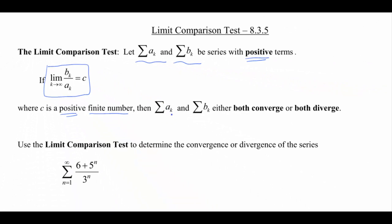Then a sub k and b sub k, the series, either both diverge or they both converge. So it just depends on what the one's doing means the other one will behave the same way.